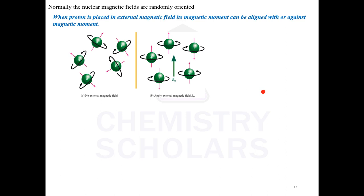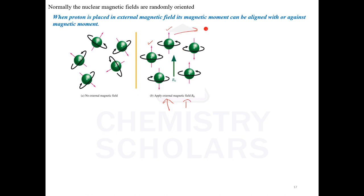When you place the molecule in a magnetic field, before the magnetic field is applied, all the nuclear magnetic fields are randomly oriented. But when external magnetic field is applied, there is a certain arrangement. Either the nuclei align themselves in the direction of the applied magnetic field, or they are aligned against the applied magnetic field — in the opposite direction.